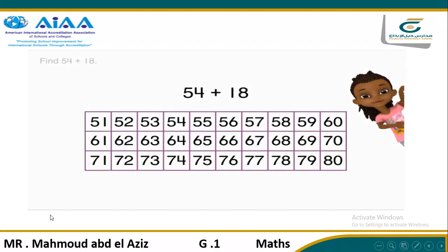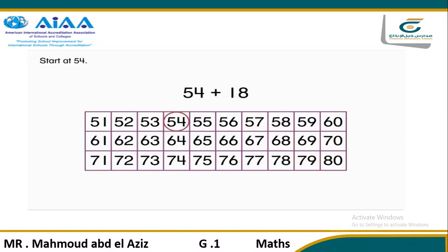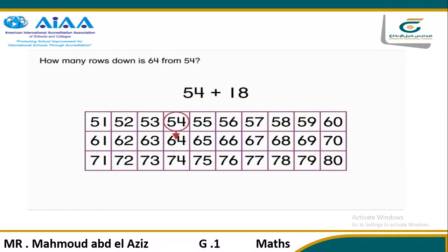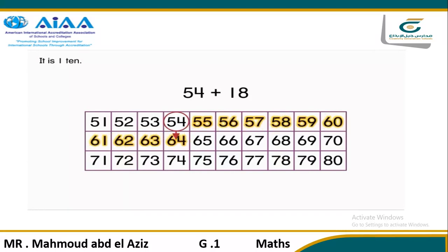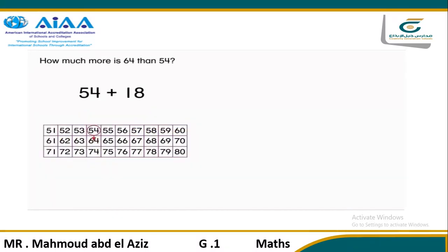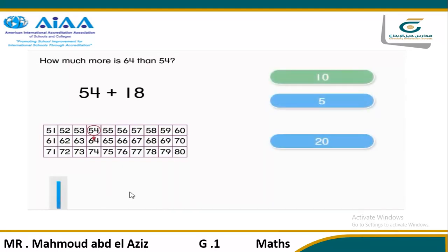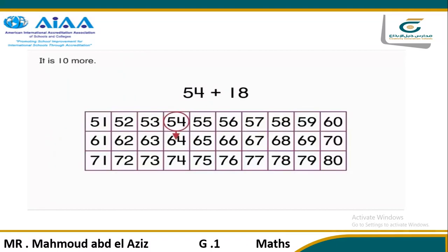54 plus 18. Start at 54. Add the tens from 18. Move down one row to show one 10. How many rows down is 64 from 54? 64 is one row down from 54. How many tens is that? It is 1 ten. How much more is 64 than 54? Select your answer. It is 10 more.